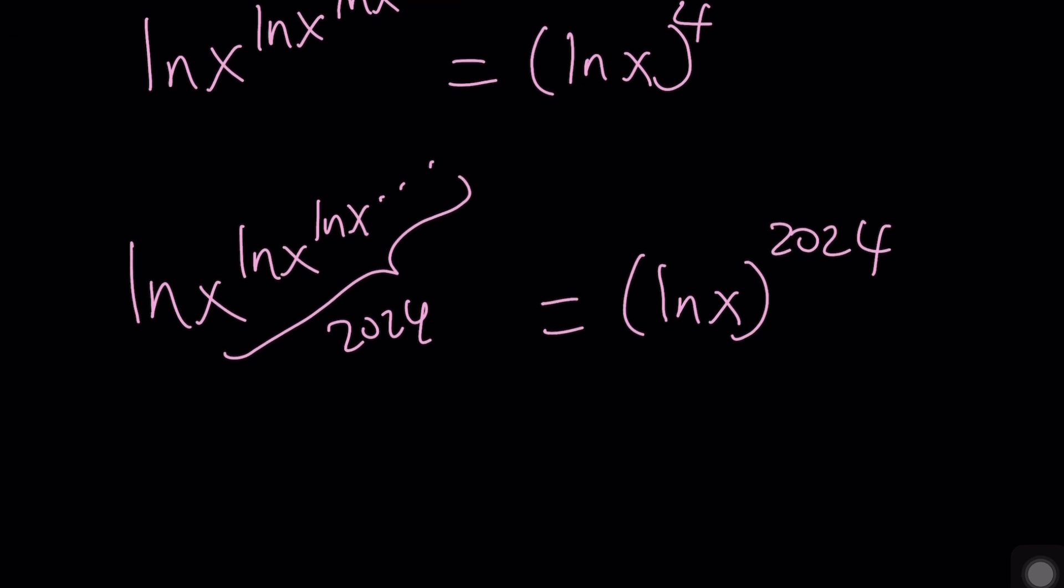It probably doesn't converge because think about ln(x) to the power infinity. That's infinity, right? What if this is super small, like 0? Approaches 0. If x approaches 1, then this will approach 0. 0 to the power infinity. Is that infinity as well? Something to think about. I'll leave it open. Let's go ahead and take a look at the graph and we'll just finish up.